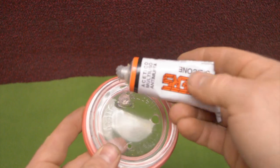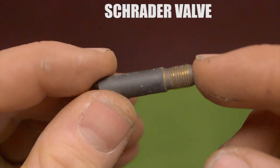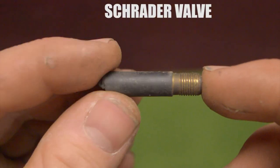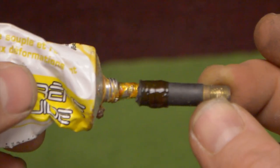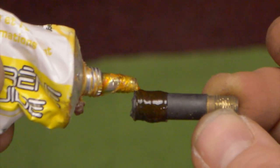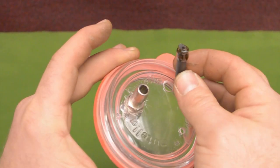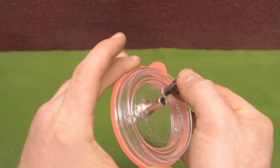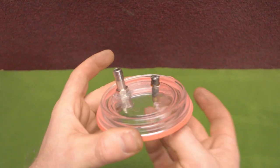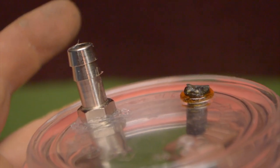Now I take a Schrader valve from a bike tire. I put some glue all around the valve like this and push it inside. This time it goes inside the 8 millimeter hole. We wait for the glue to dry.